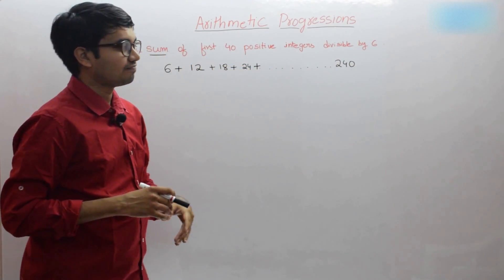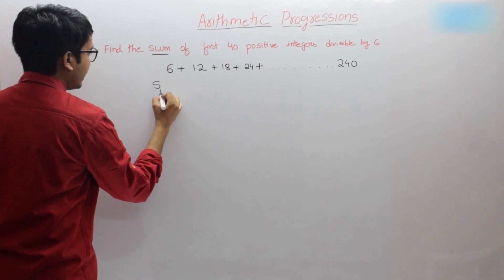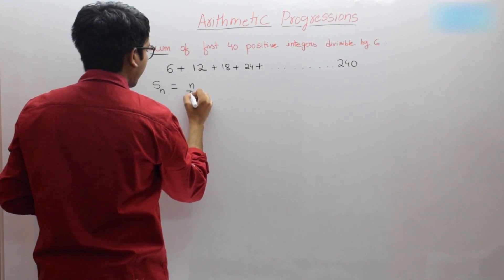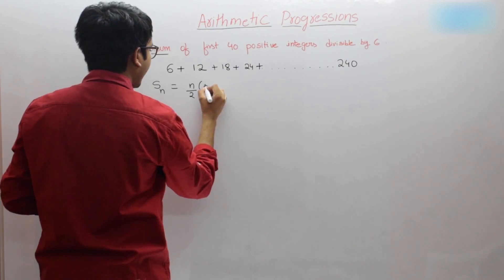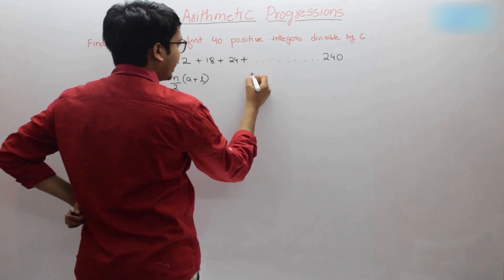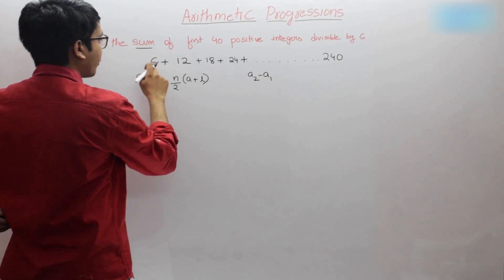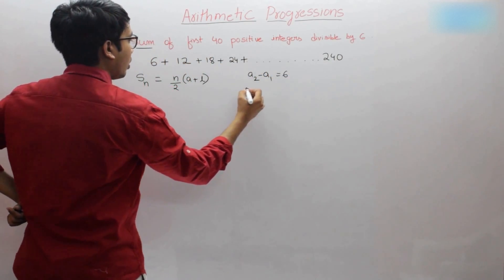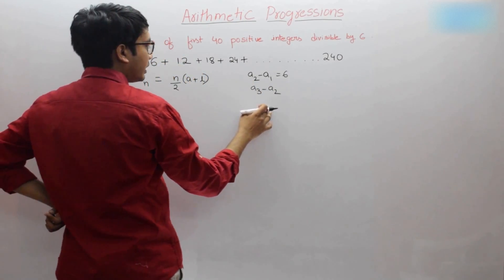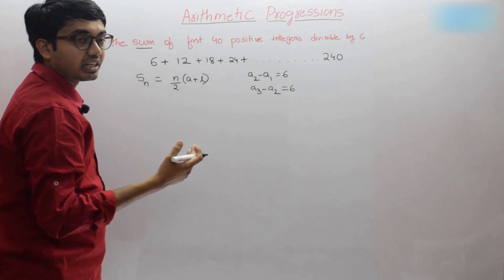So the last term is 240. Is this series in AP? Yes. If you take a2 minus a1, that is 12 minus 6, which is 6. Or a3 minus a2, that is 18 minus 12, which is also 6. Any two consecutive values give the same difference, so yes, this series is in AP.